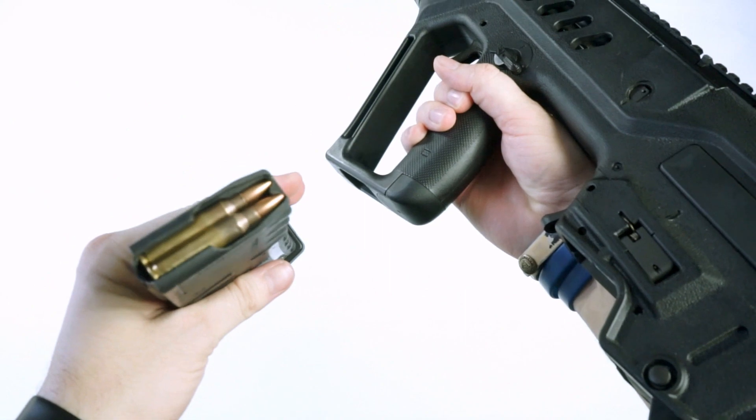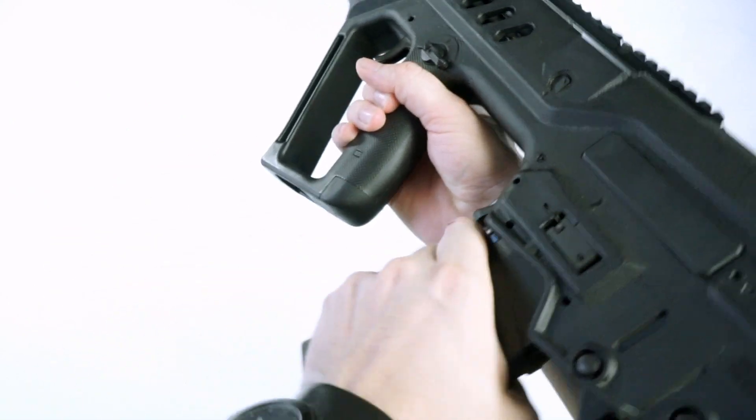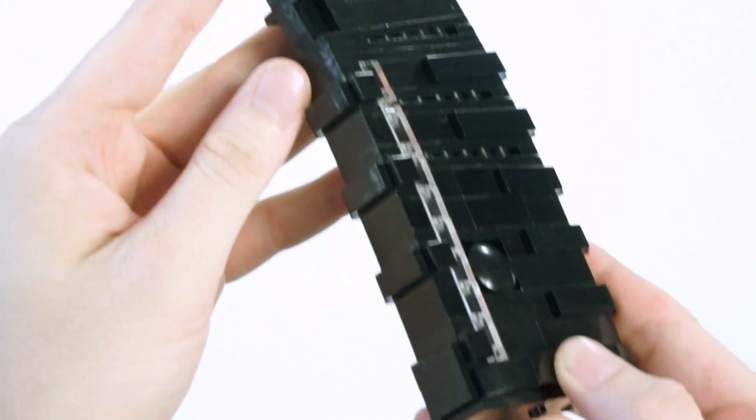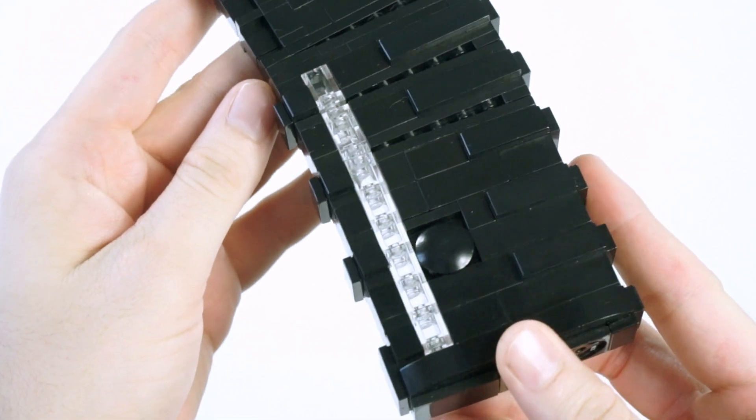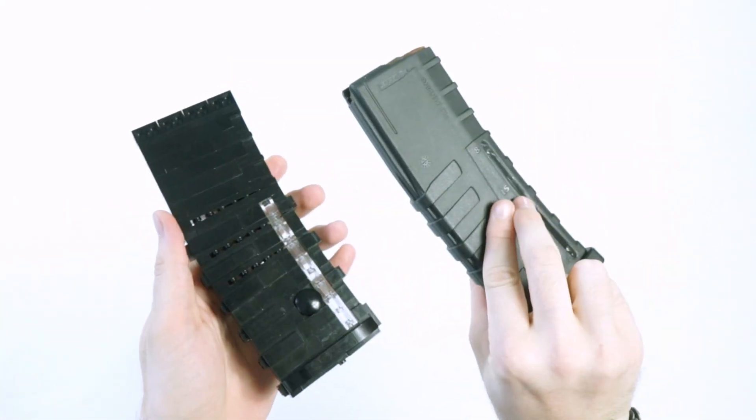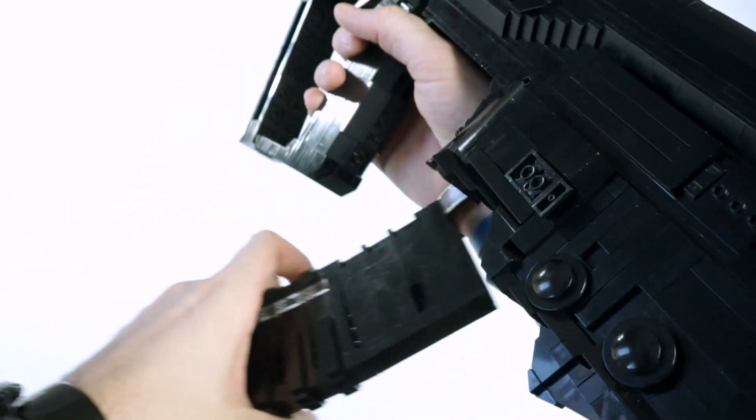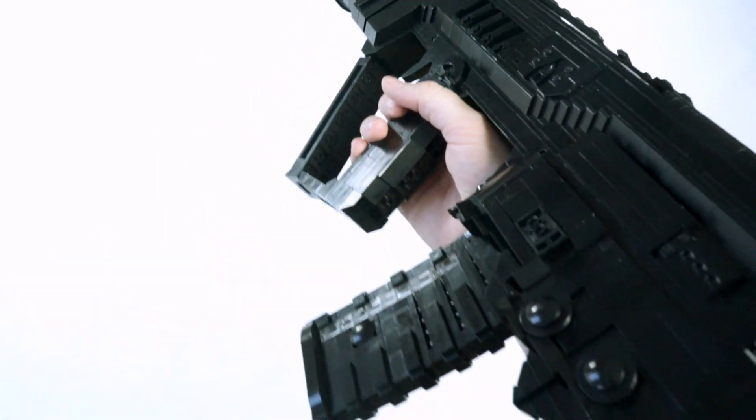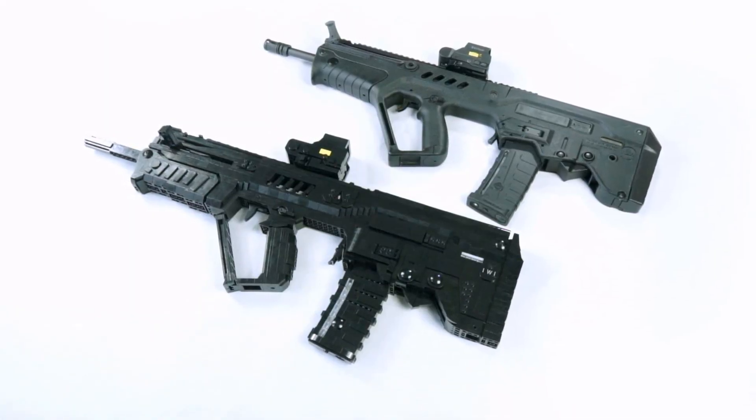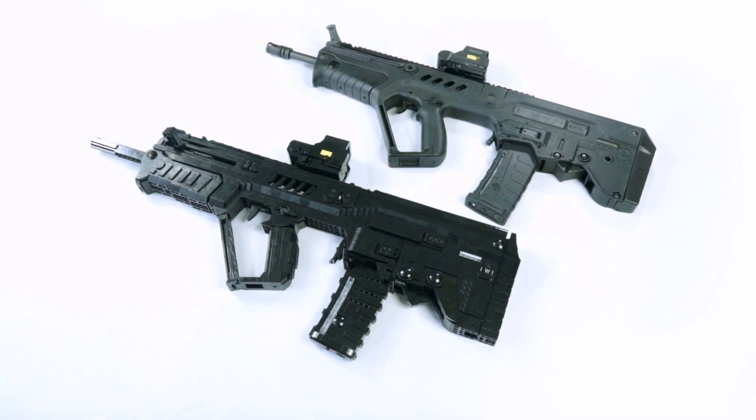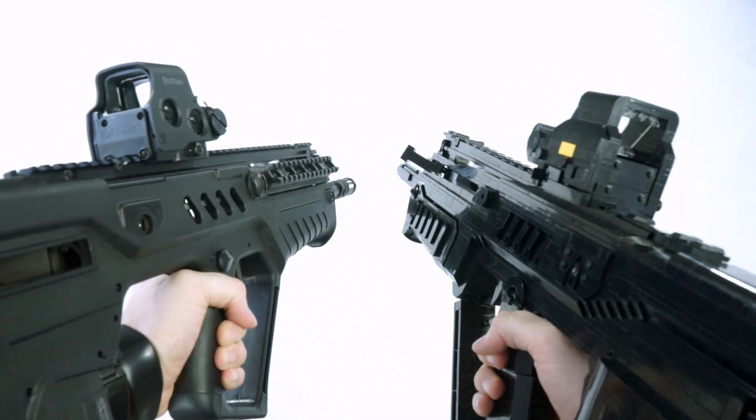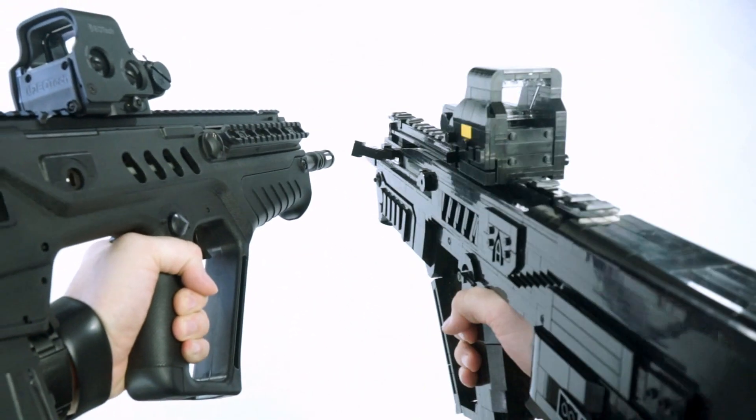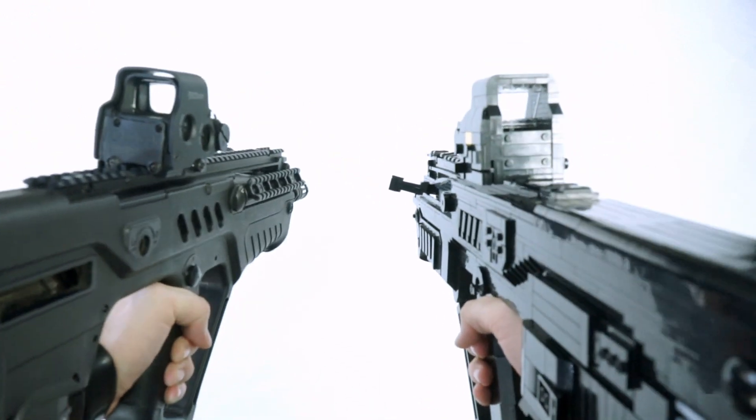His rifle even came with this polymer magazine that has a few markings and details, as well as this window to see the inside contents of the magazine, and this here was pretty fun to replicate too, and is a lot more sturdy than that of the STANAG magazine. It feels cool knowing that I was successfully able to copy his gun and fully recreate it into Lego form, and they're so close in resemblance that it honestly feels like I've attached the dual wield attachment to this rifle.